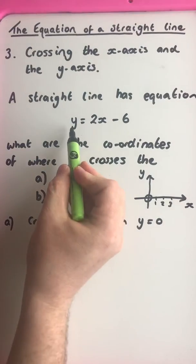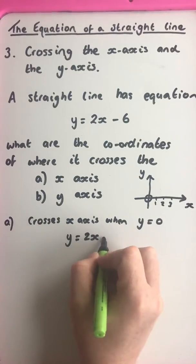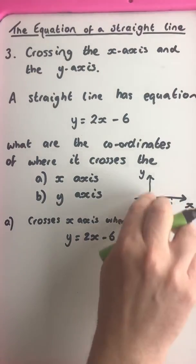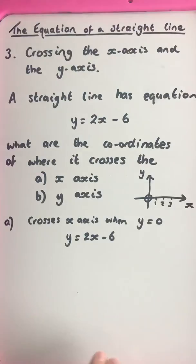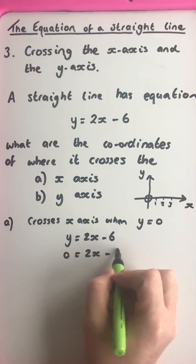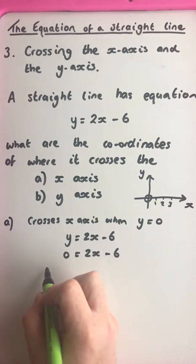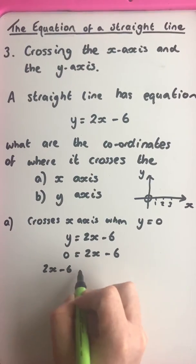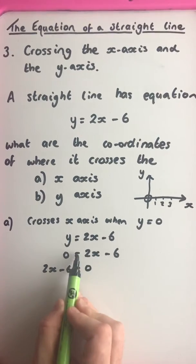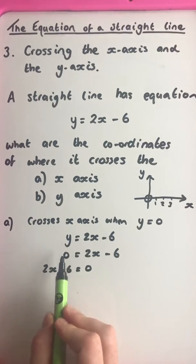So we've got this equation here, y equals 2x minus 6. And y is equal to 0. There is no distance vertically positive or vertically negative, so this here is 0. And we know that we can write this around the other way. So 2x minus 6 equals 0, because the left hand side is equal to the right hand side.